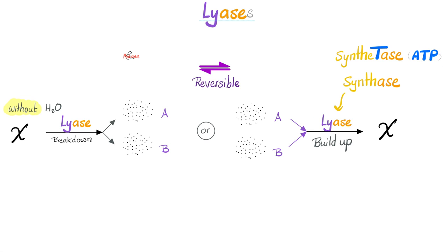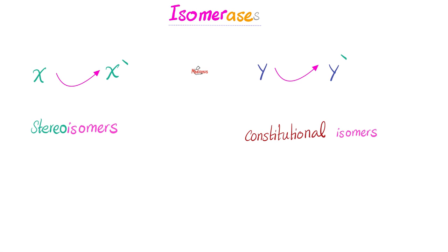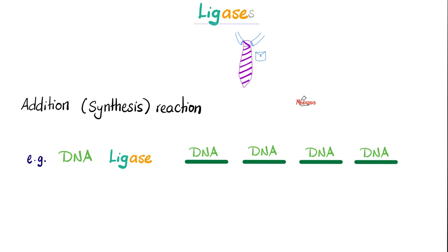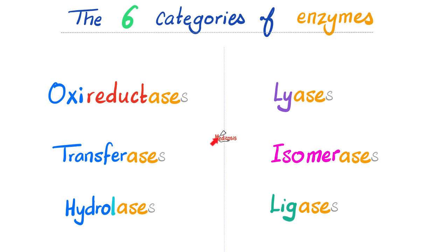What's an isomerase? It's an enzyme that will convert you to your isomer. Could be a stereoisomer or a constitutional isomer. What's a ligase then? It's an enzyme that ligates. To ligate is to tie. For example, here is a DNA fragment, another DNA. Who's gonna bind them together and tie them together to make a singular long strand? Ligase. And these are the six categories of enzymes that we studied today.